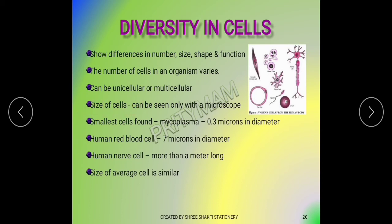Cells show many differences in size. Cells can normally be seen only with a microscope because they are too small to be seen with our naked eyes. The smallest cells found are about 0.3 microns. In comparison, red blood cells have a diameter of 7 microns. Some nerve cells can be more than a meter long.